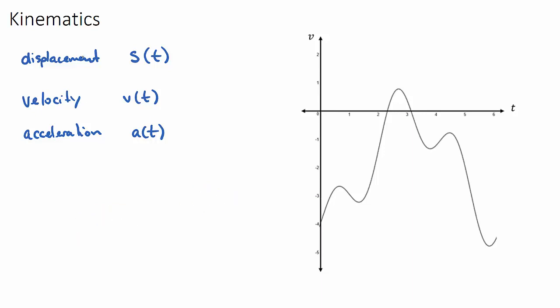Velocity is displacement over time, and acceleration is velocity over time. Velocity is very similar to speed, but speed is distance over time, whereas velocity is displacement over time.